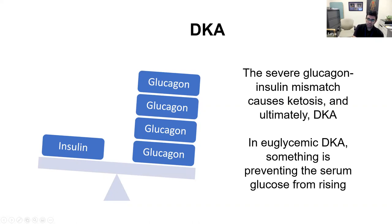In euglycemic DKA, something is preventing the serum glucose from rising. And so in this case, it's the SGLT2 inhibitor that is responsible for that.